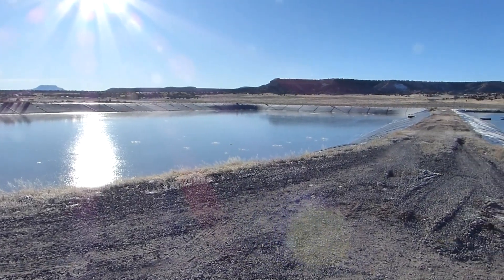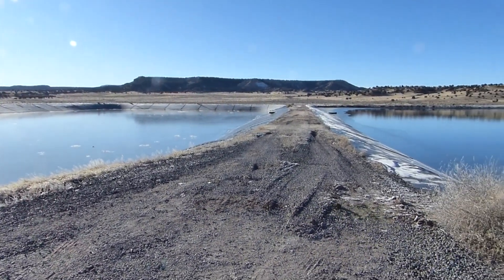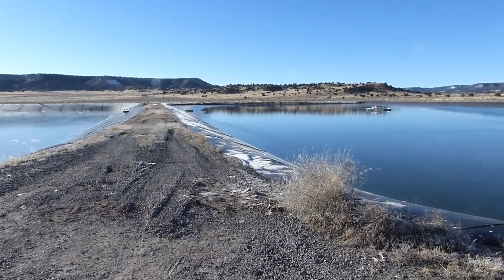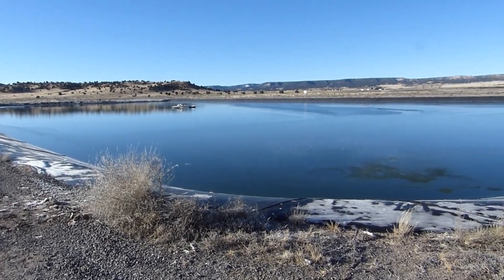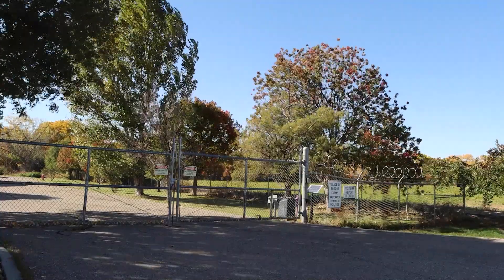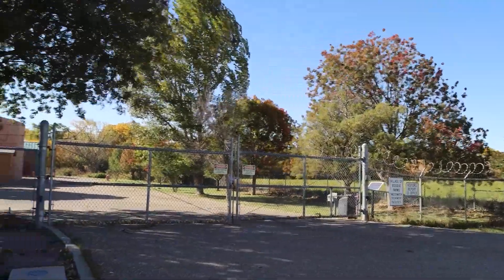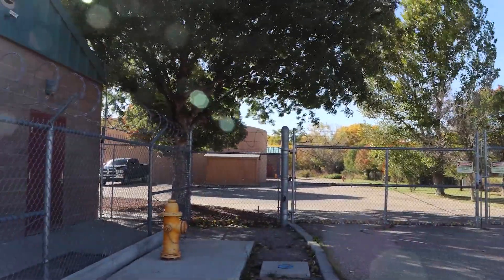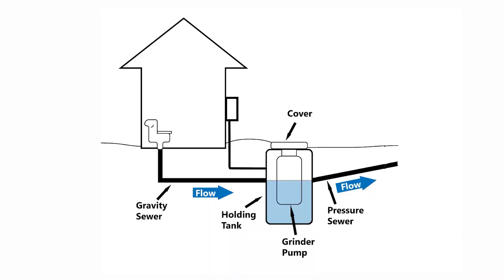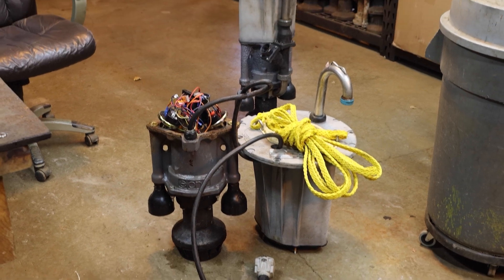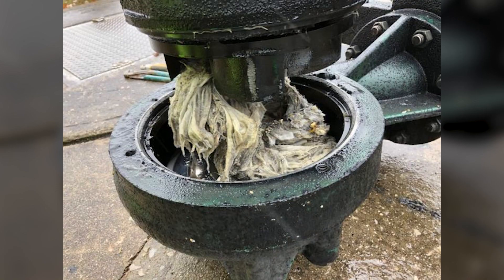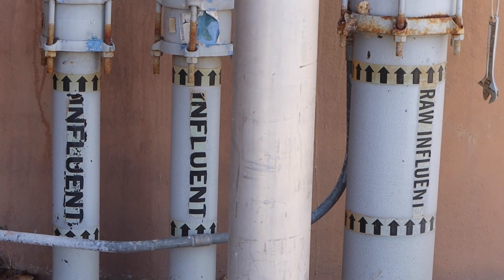There are different types of facilities that perform this function, including the two we're going to focus on in this video. While the end result is similar, the differences in the treatment processes give rise to various strengths and challenges. First, we're going to the community of Bosque Farms, New Mexico, where they have a conventional wastewater plant. Each connection is equipped with a small tank outside the building that contains a special type of water pump called a grinder pump, which shreds any debris in the wastewater as it pushes through the collection piping to the plant.